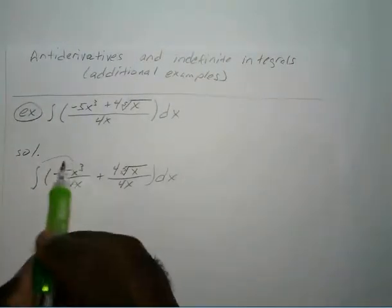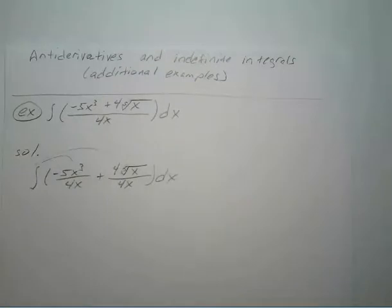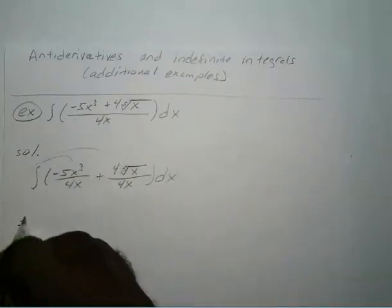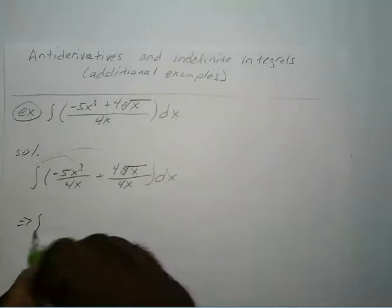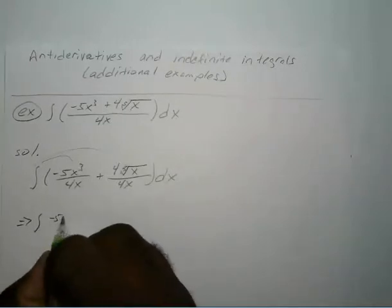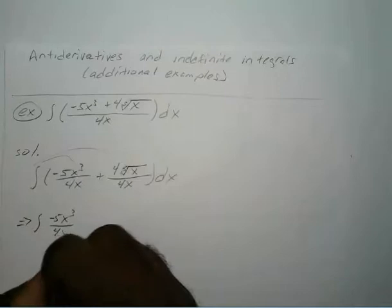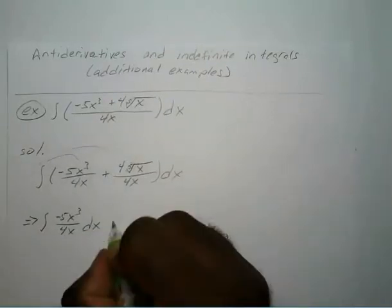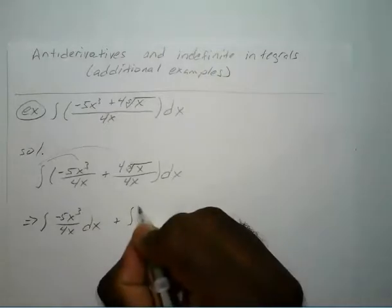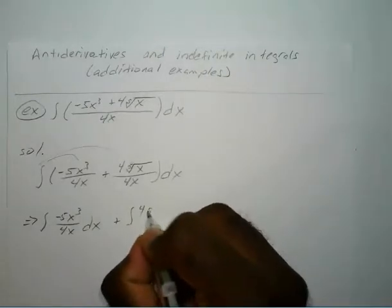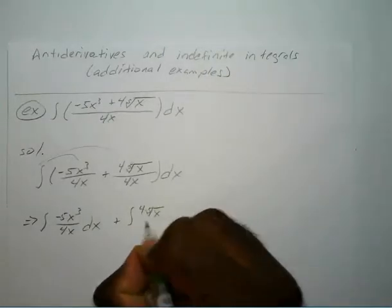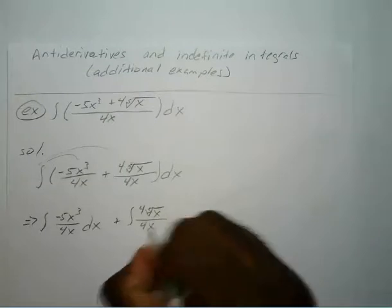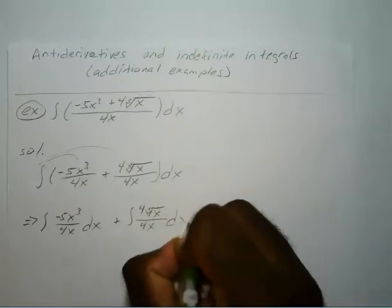Remember all you have to do is distribute your integration sign to both terms. So that will give you the integral of negative 5x to the third over 4x with respect to x, plus the integral of 4 times the fifth root of x over 4x with respect to x.